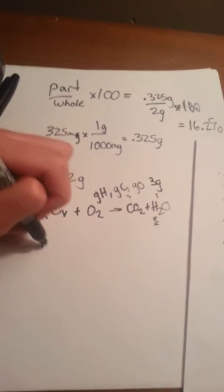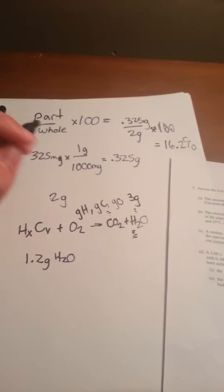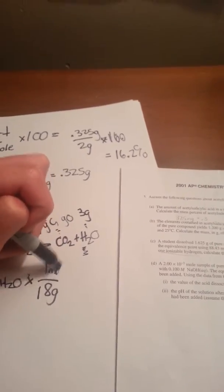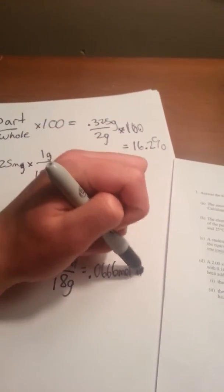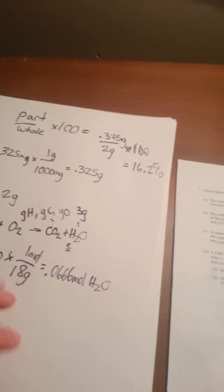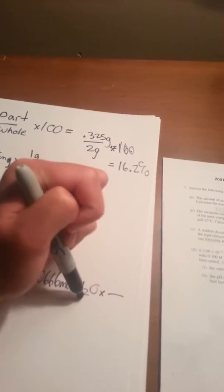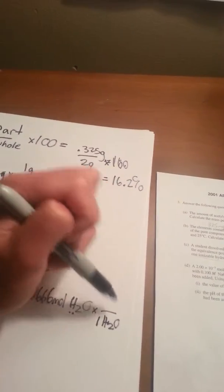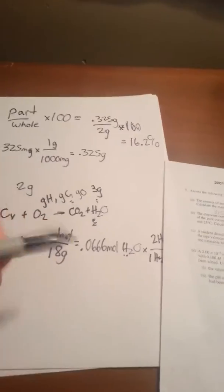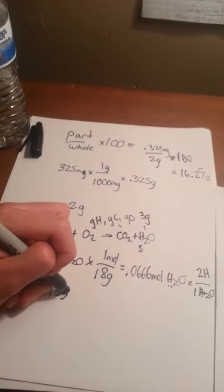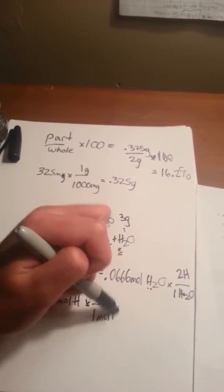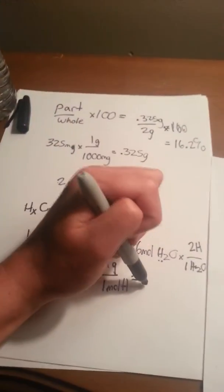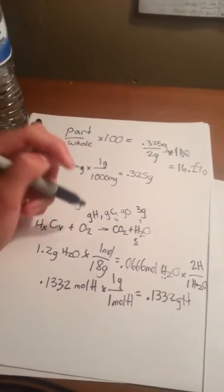Let's start by finding H. We're going to take that 1.2 g of H2O and convert that into moles: 1.2 g over 18 g per mole gives us 0.0666 moles of H2O. Because there's two H's in one H2O, we times that by 2, giving us 0.1332 moles of H. Converting to grams, that's 0.1332 grams of H.